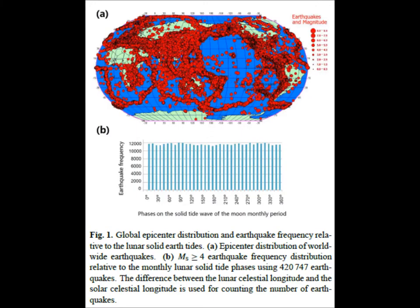In Figure 1, we see the global epicenter distribution and earthquake frequency relative to the lunar solid Earth tides. In Figure 1a, the top figure, we see the epicenter distribution of worldwide earthquakes. The earthquake magnitude is reflected by the size of the red circle. The largest circle reflects earthquakes 8.0 to 8.9 in magnitude; the next circle down represents earthquakes 7.0 to 7.9 in magnitude, and so on downward.